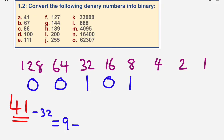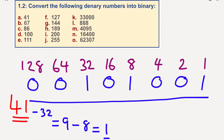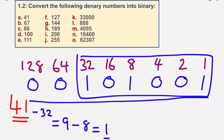Does 8 go into 9? Yes it does, which means if I remove 8 from 9, we only have 1 left. 4s don't go into 1, 2s don't go into 1, but 1s do go into 1. So my answer is 101001. We can check this: 32 plus 8 is 40, plus 1 is 41. Correct.